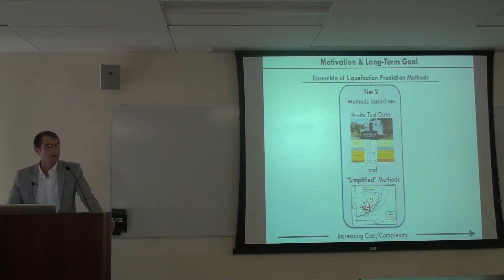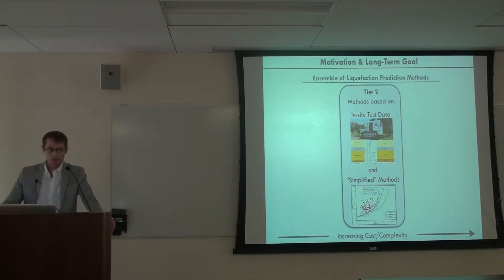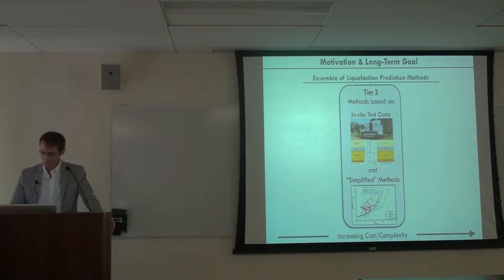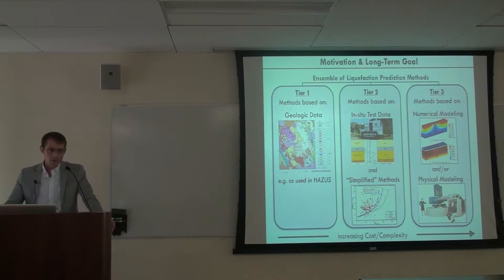Looking at the ensemble of methods for predicting liquefaction, we have three tiers. Starting in the middle, we have methods based on in-situ geotechnical tests used with so-called simplified methods — a triggering model used in sequence with a manifestation model. Considering different data types, triggering models, and manifestation models, you can easily think of 30 or 40 variations. We might go up a tier to physical or numerical modeling, or down to tier one using geologic data, such as what's used in the Hazus system.